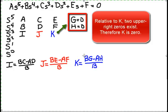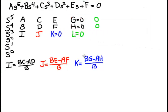Relative to K, two upper right zeros exist, therefore K is zero. Now calculate L.